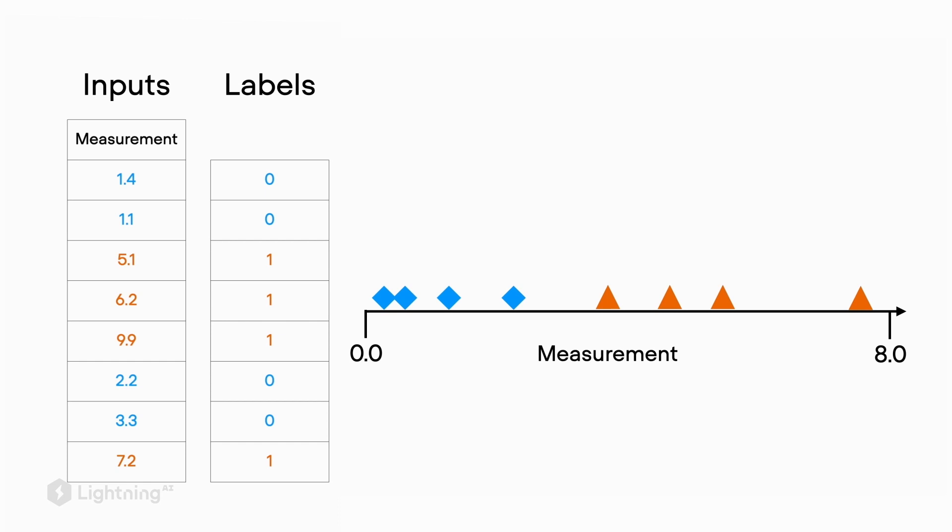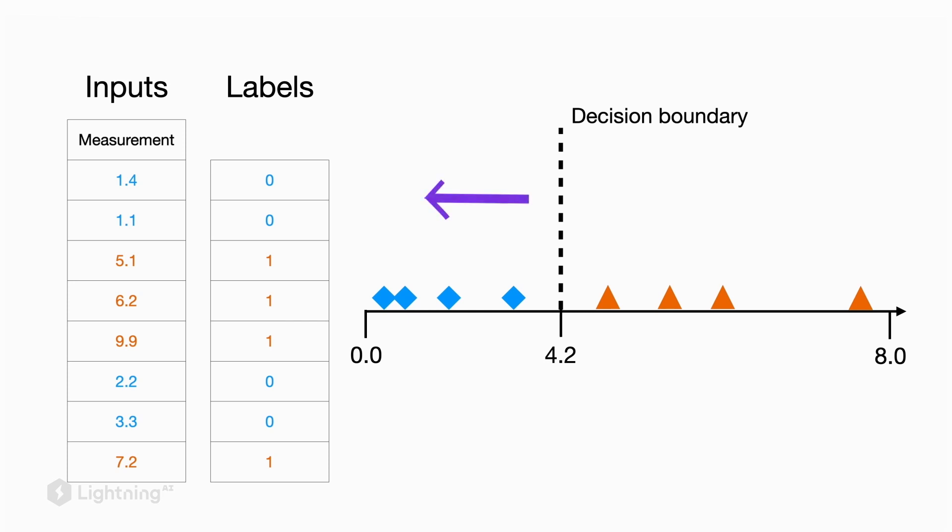So based on our dataset here on the left-hand side, a reasonable decision boundary would be at the measurement 4.2. So we can say any new point that falls on the left side of the decision boundary is a blue diamond. And any point that falls on the right side of this decision boundary is an orange triangle. So this way, we can use the decision boundary and apply it to new measurements.